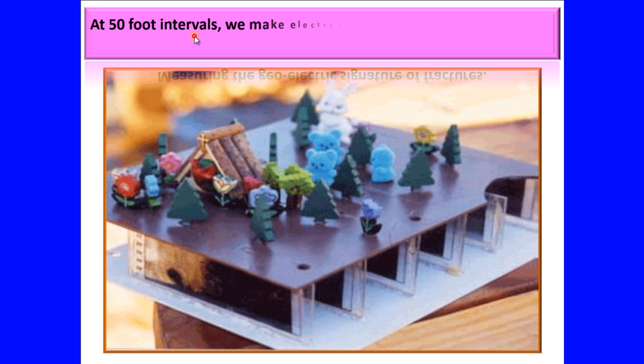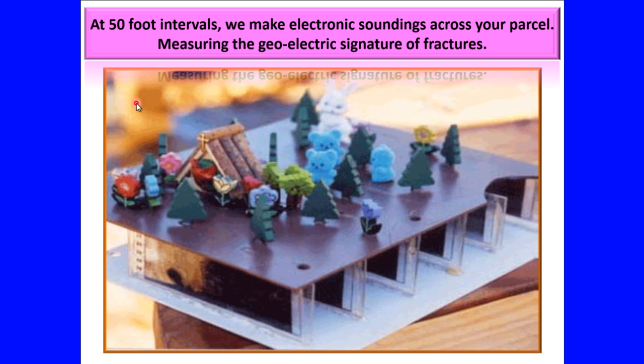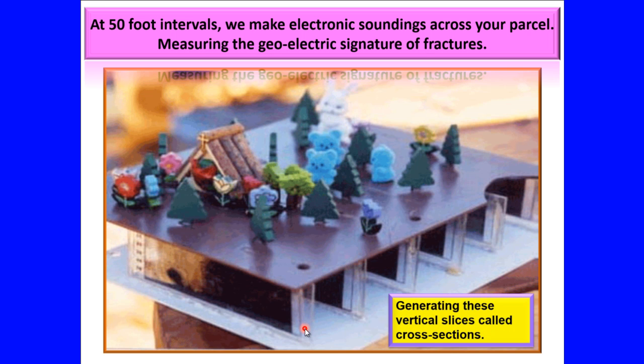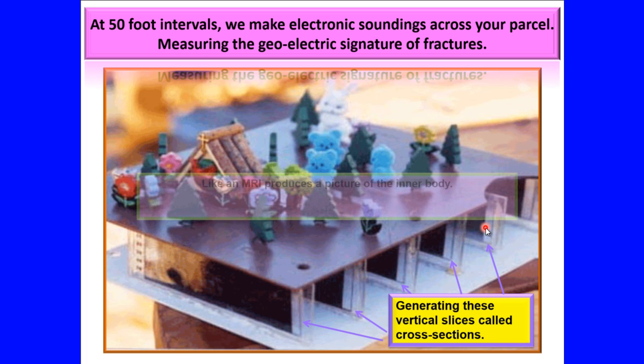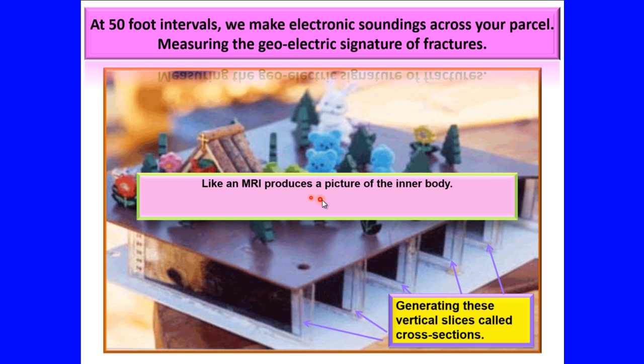At 50 foot intervals, we make electronic soundings across your parcel, measuring the geo-electric signature of fractures, generating these vertical slices called cross sections. Like an MRI produces a picture of the inner body, we produce a picture map of your aquifer system, identifying the more fractured porous zones where water would collect.